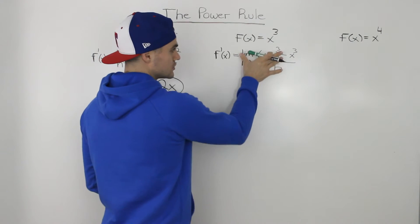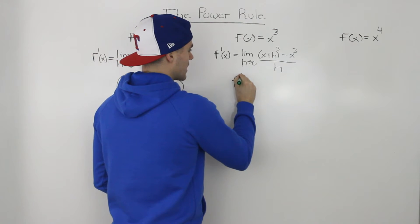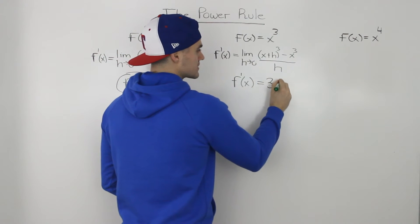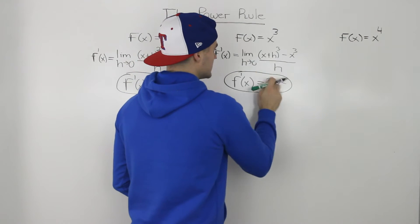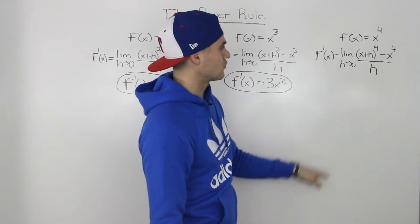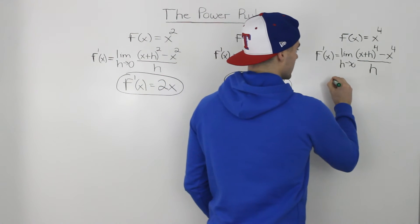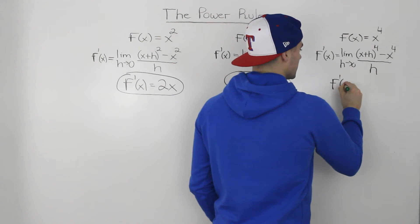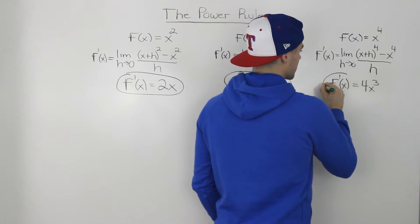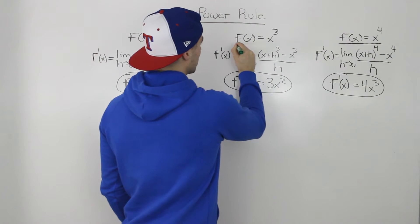If you do all the algebra — expand, cancel out the h's, and plug in 0 for h — you end up with a final derivative of 3x². So 3x² is the derivative of x³. Similarly, the derivative of x⁴ would be the limit as h goes to 0 of (x+h)⁴ minus x⁴, all over h. Doing all that algebra — which would be a lot of algebra — you end up with 4x³.